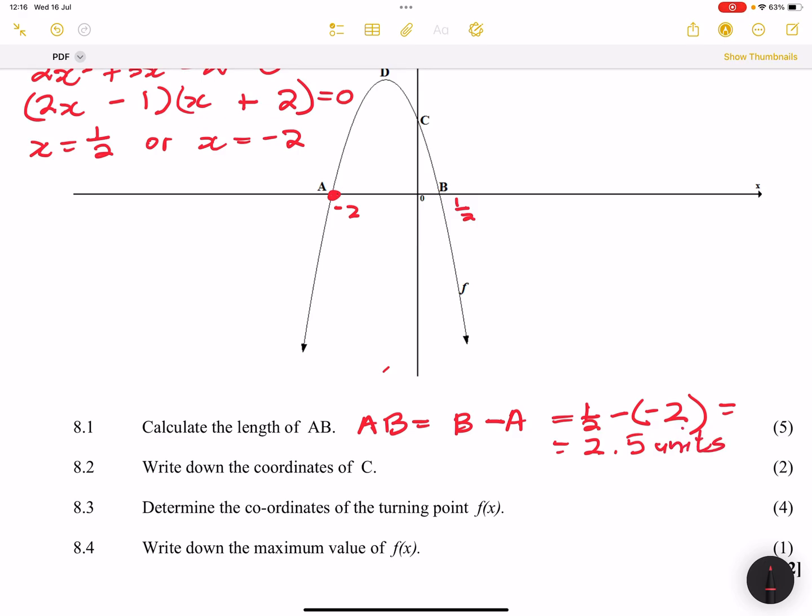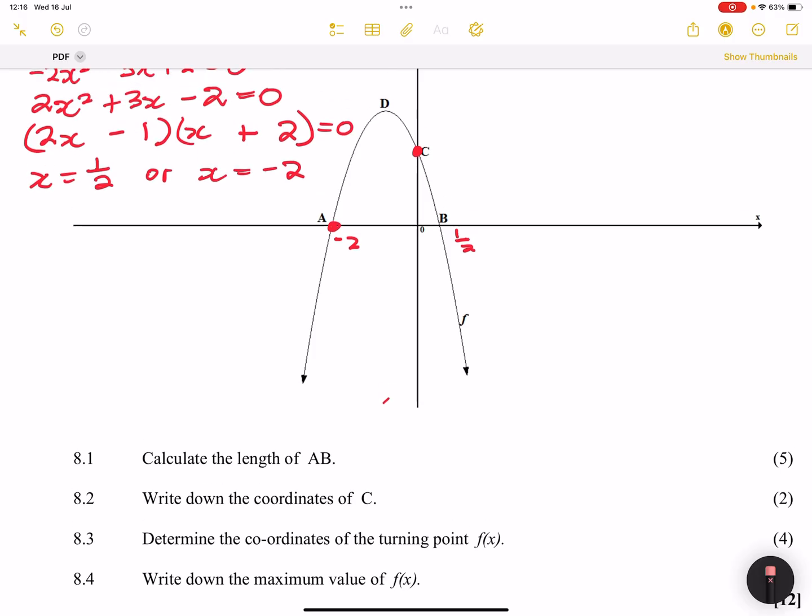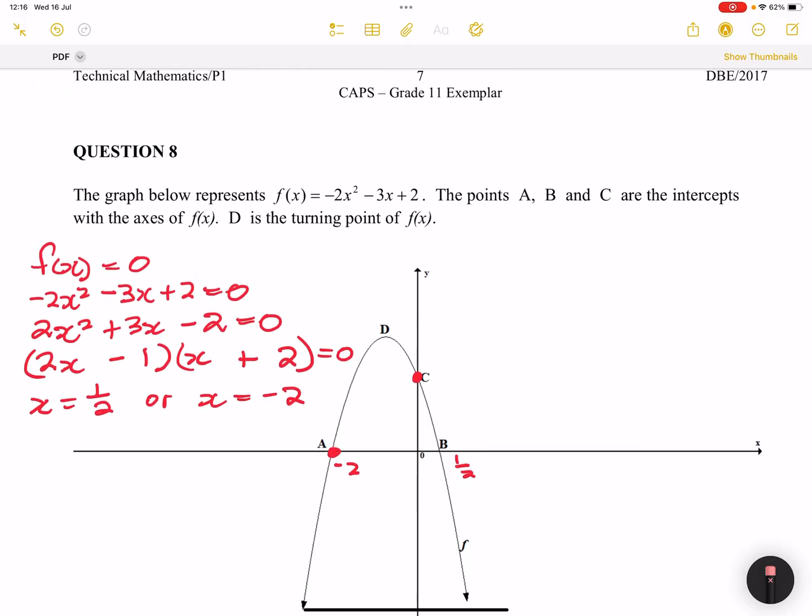All right. And the next one, we are now looking for, they say, write down the coordinates of C. So that's the y-intercept. And please note, for the graph, the parabola, we know that the y-intercept is always the constant term.